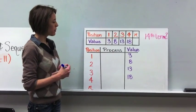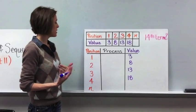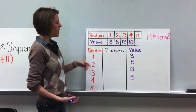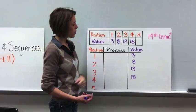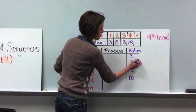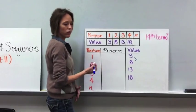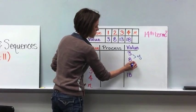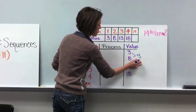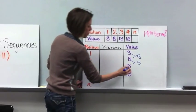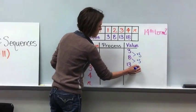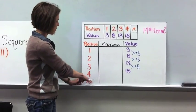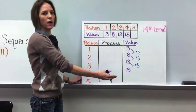The first thing you're going to do after you draw your table is find the common difference. We know that this is position 1, 2, 3, and 4, and here are our values. When you're going from 3 to 8, we know it's plus 5. Then going from 8 to 13, it's also plus 5, and from 13 to 18, it's plus 5. So if we were to continue for term number 5, it would also be plus 5, and so on.